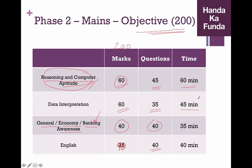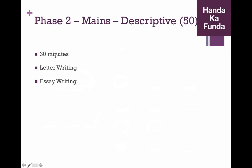Another thing that they have introduced new this time is the sectional time limits. You will have 60 minutes for the reasoning section, 45 minutes for the DI section, 35 minutes for the banking section and 40 minutes for the English section, which will make the overall paper a 2-hour paper. Not only that, in the mains, there is another part which is for 30 minutes and for 50 marks that will consist of letter writing and essay writing. This is again something for which you will need a little bit of practice. We do cover it extensively in our online course on handakafanda.com.